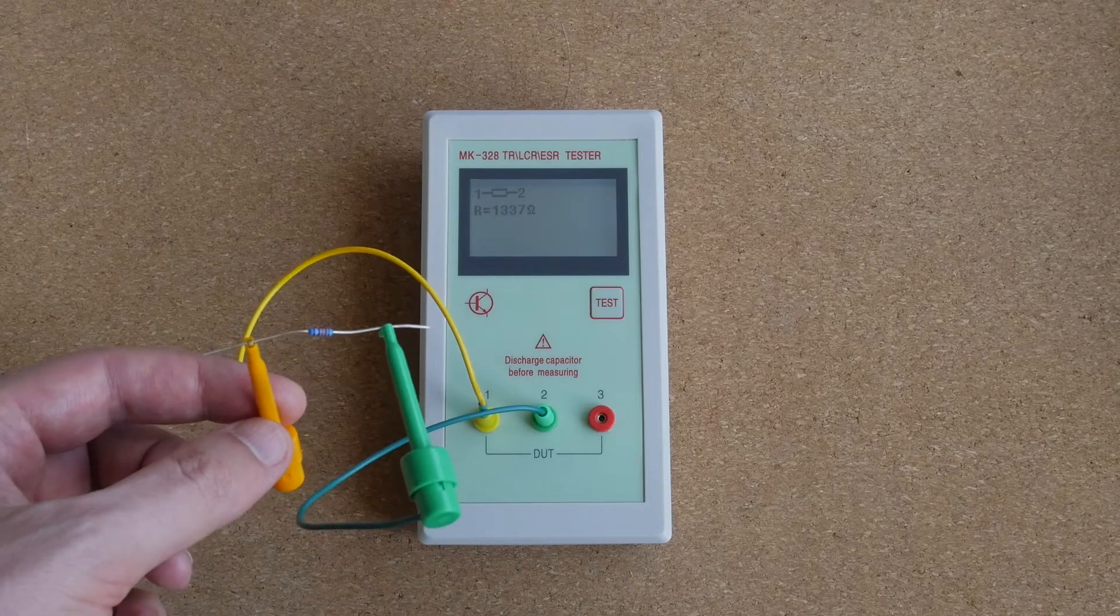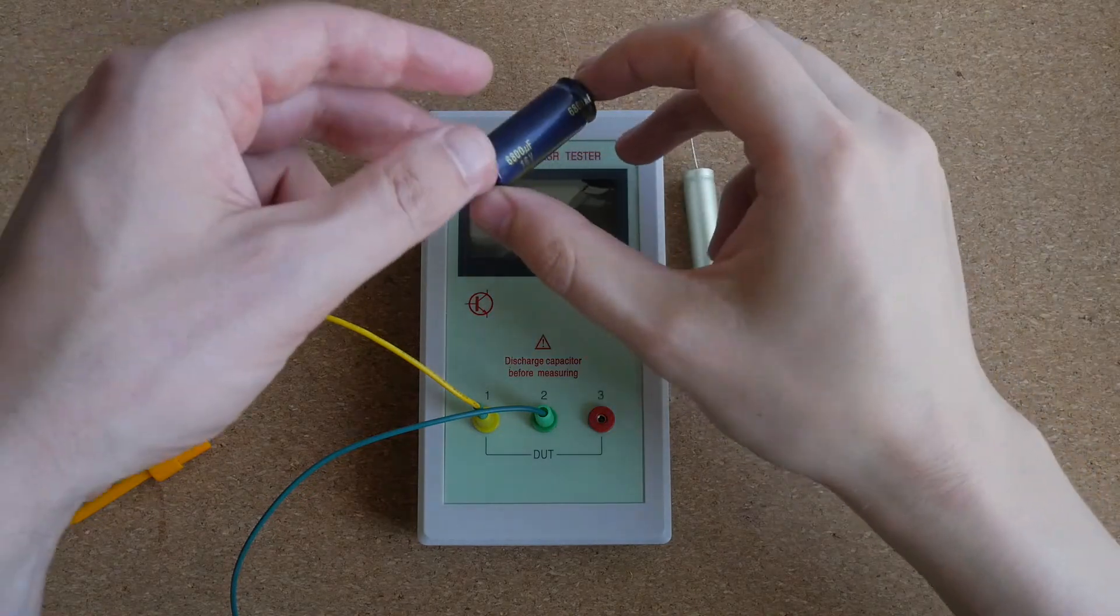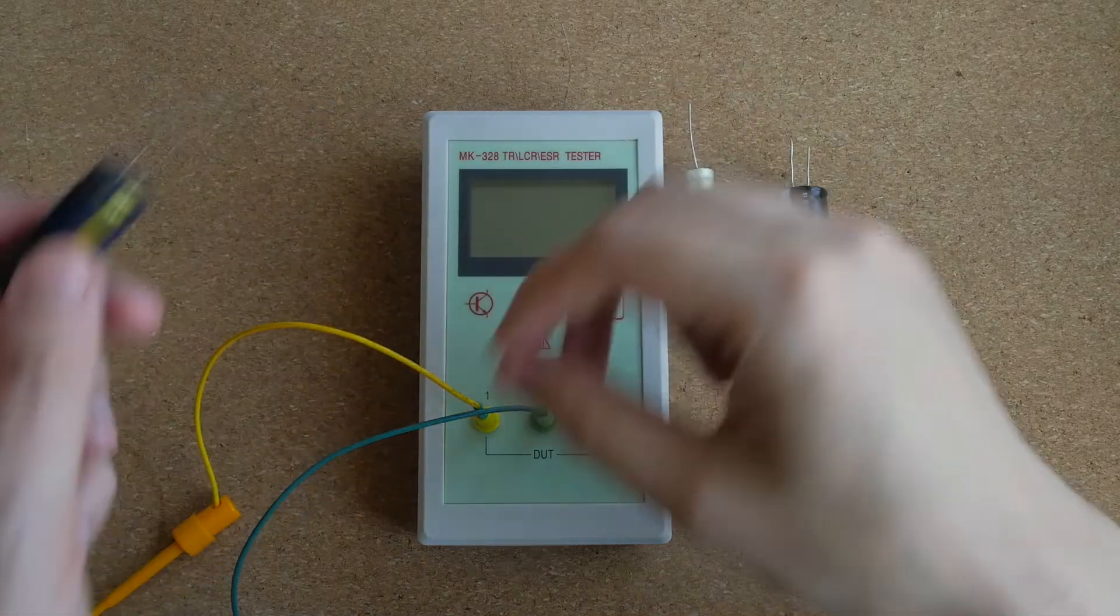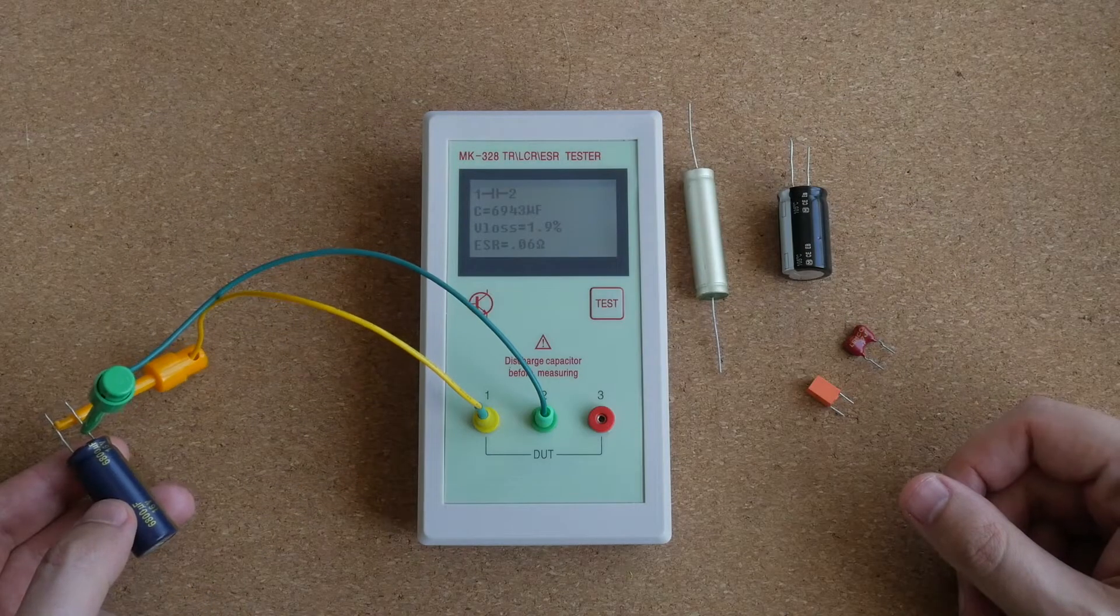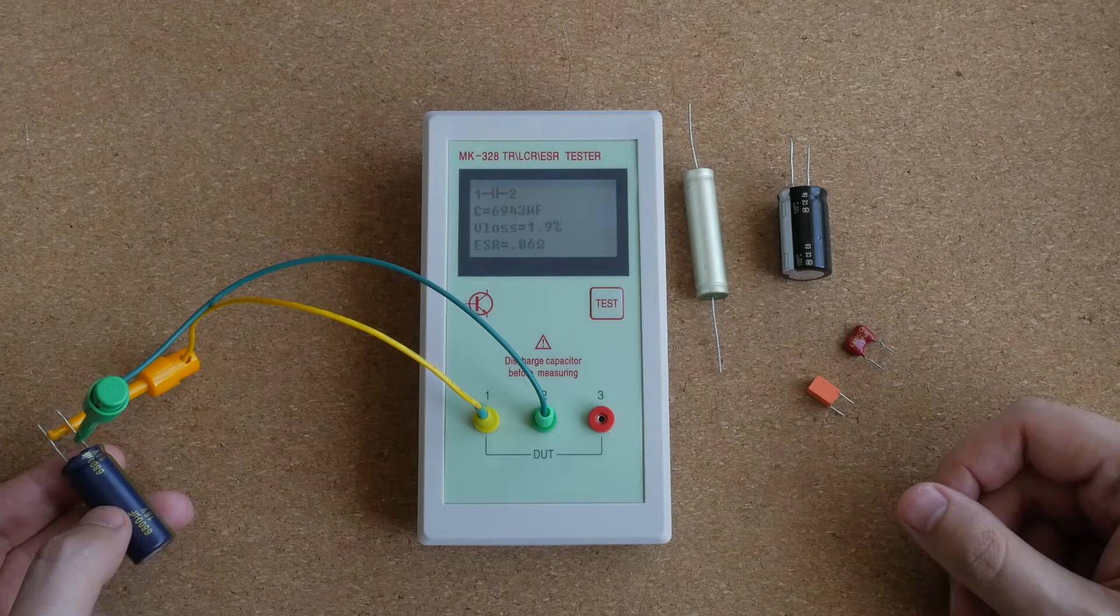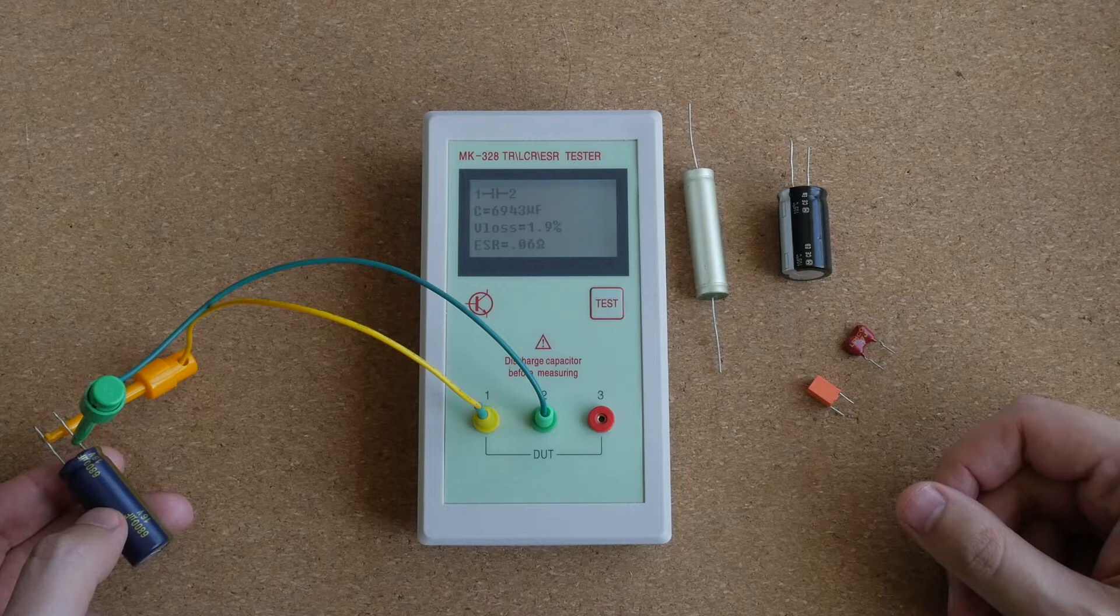Right on the money. Now let's move to capacitors. I will start with this big one. 6,800 microfarad. 6,943 microfarad. Voltage loss is 1.9% and ESR 0.06 ohm.